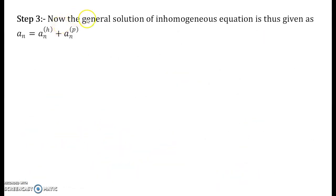Step 3 will be the general solution of the inhomogeneous recurrence relation, which will be given by an equal to an to the power h plus an to the power p. That is the homogeneous recurrence relation solution that we got along with the particular solution.